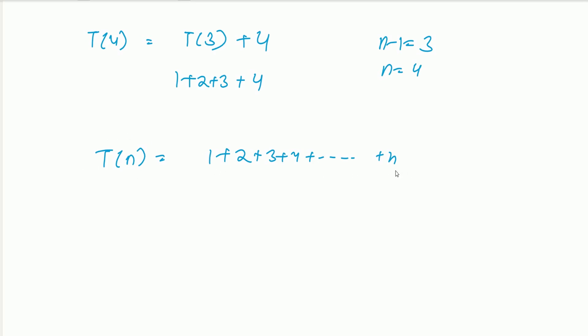Now we can directly solve this. This is a summation of i equals 1 to n of i, and the formula is sum of n natural numbers, which is n times (n+1) divided by 2. So the time complexity, T(n), equals n squared plus n by 2, or big O of n squared.